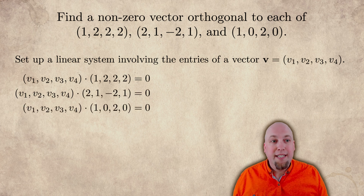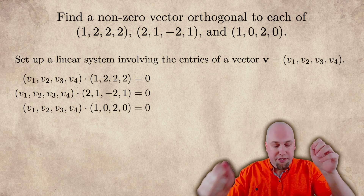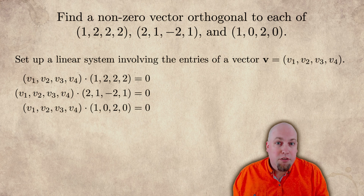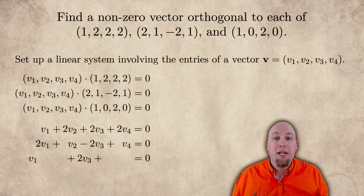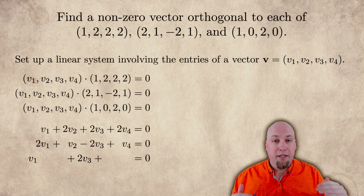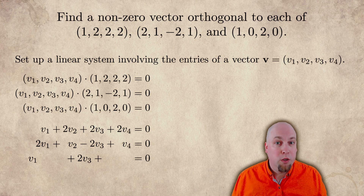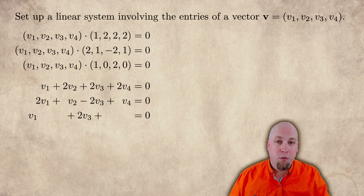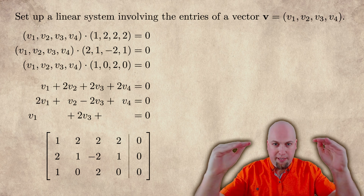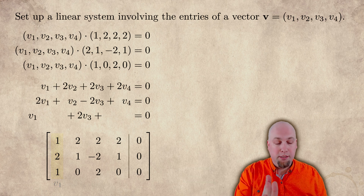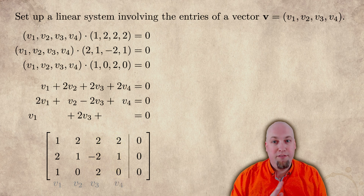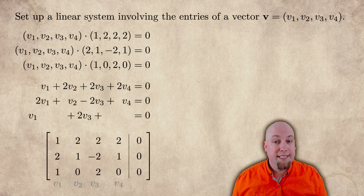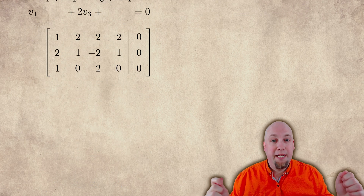We don't know what our vector v is, so give names to its entries: v1, v2, v3, and v4. We want its dot product with these three vectors to all equal zero, because that's what orthogonality is. So write down v = (v1, v2, v3, v4) dotted with each of these vectors equals zero. These are all just linear equations — v dotted with (1, 2, 2, 2) = 0 is just v1 + 2v2 + 2v3 + 2v4 = 0, and similarly for the other two dot products. I can throw this all into a matrix: three rows because there are three equations, and four columns plus the augmented zeros column because there are four variables. Then I apply Gaussian elimination to bring this matrix down to reduced row echelon form.